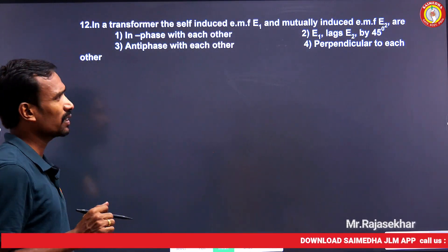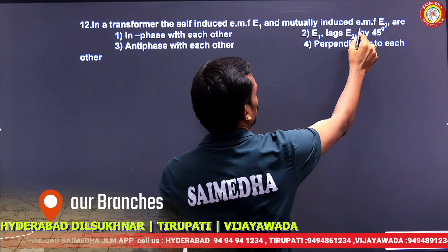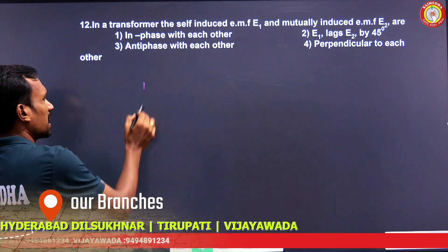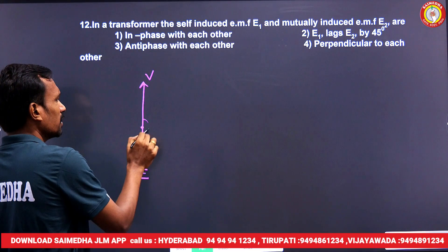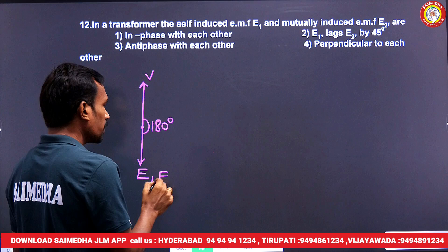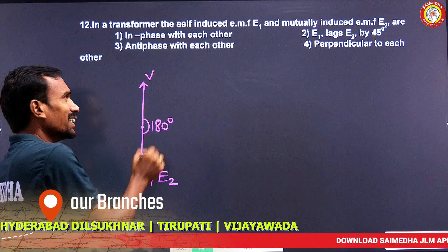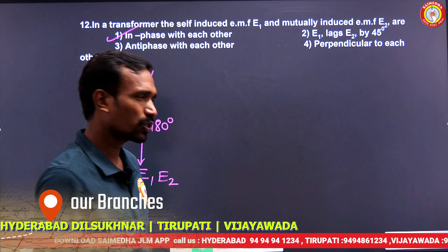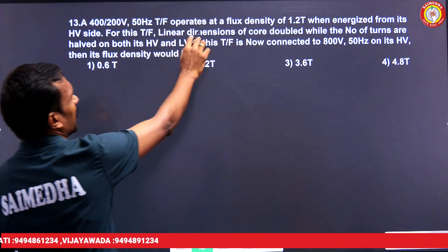In a transformer, the self-induced EMF and mutual-induced EMF — are E1 and E2 in phase or out of phase? Generally, a transformer is a phase-shifting device. The phase shift between supply voltage and induced voltage is 180 degrees, but the angle between primary and secondary induced EMFs: V and E1 are 180°, V and E2 are 180°, but E1 and E2 are in phase with each other.